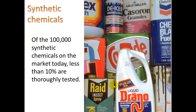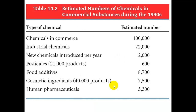Of the 100,000 synthetic chemicals on the market today, less than 10% are thoroughly tested — actually significantly less, maybe a few percent. Most are industrial chemicals; some are pesticides. About 2,000 new chemicals were introduced per year in the 90s, though I've heard that number is now closer to 700. There are also many food additives — synthetic chemicals added to food that living organisms have never seen before — as well as artificial flavors, colors, and cosmetic ingredients applied near our eyes, lips, and skin, all of which are good entry points into the body.